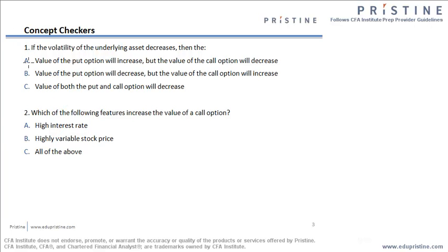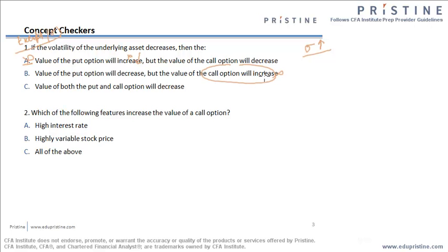Now let's read this question. It says: if the volatility of the underlying asset decreases, then... Remember, when sigma is decreasing, the value of both the call option and put option decreases. The first option says value of put option will increase — no, this is wrong because if the volatility is decreasing, this has to decrease as well. The second option says value of the put option will decrease but value of the call option will increase — no, this doesn't hold true. The third option says value of both the put and call option will decrease, which is a correct statement. Remember this as an exception: sigma is the only parameter that affects all option prices in a similar manner.